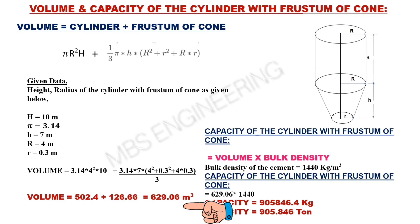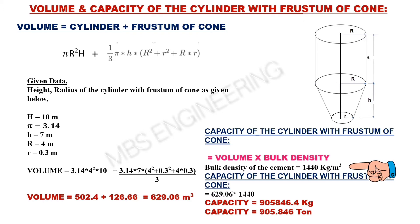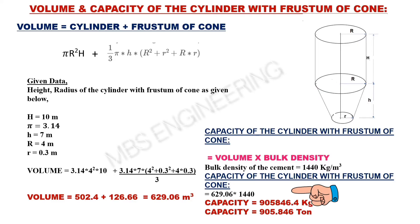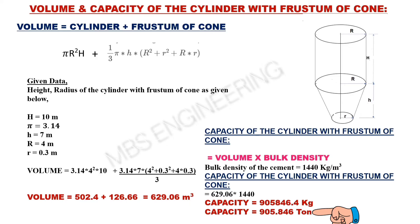The volume of the cylinder with the frustum of cone is 629.06 cubic meters. Next, we learn about how to calculate the capacity: volume multiplied by bulk density. Assuming the bulk density of cement is 1,440 kilograms per cubic meter, 629.06 multiplied by 1,440. The cylinder with frustum of cone has a capacity of 9,05,846.4 kilograms, or 905.846 tons.